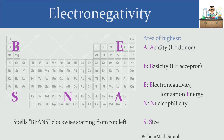Electronegativity is the trend we're focusing on today. Even though things get more electronegative towards the top and to the right, it's a good idea not to include the noble gases, because they generally have a filled valence shell. Even though they could be attractive toward an incoming electron, they don't have enough space for one. As a general rule, ignore noble gases — helium, neon, argon — when talking about electronegativity. They are not going to attract electron density toward themselves.